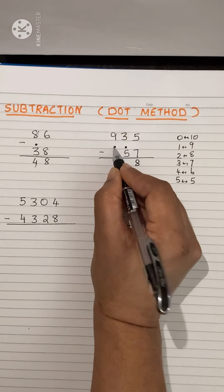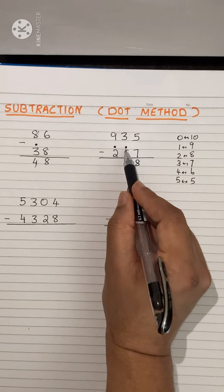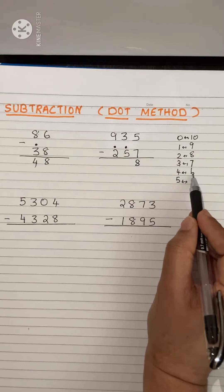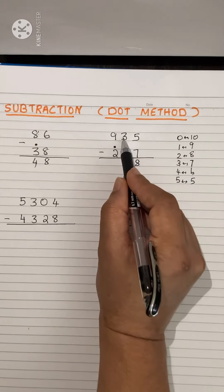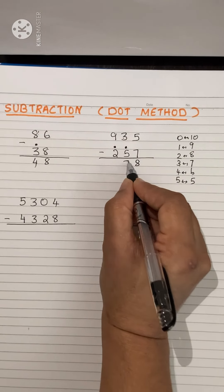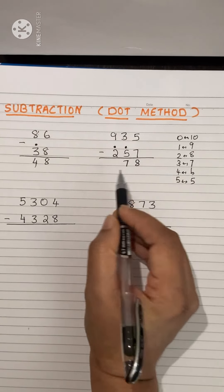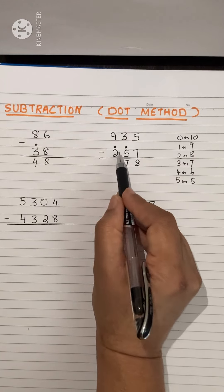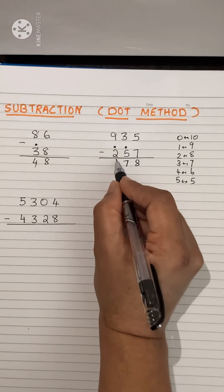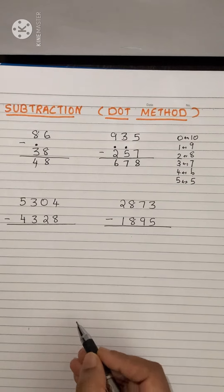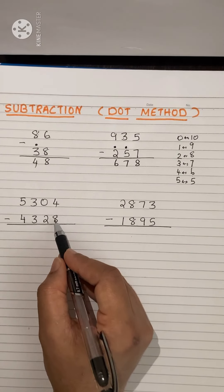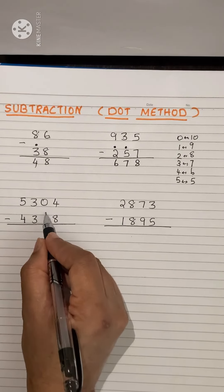Now 3 and 6 — not possible. So put a dot over here. This number is now 6. Which number is related to 6? It is 4. Add that 4 with 3: 3 plus 4 is 7. Next, this is 2 plus 1 equals 3, and 9 minus 3 is 6.